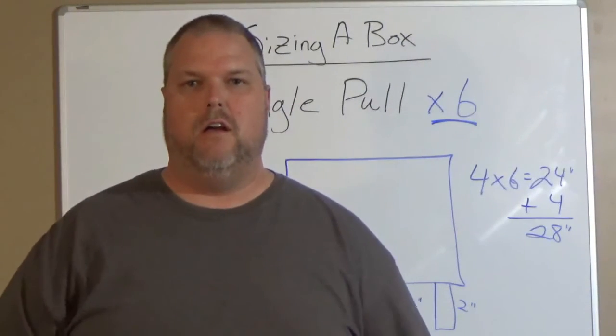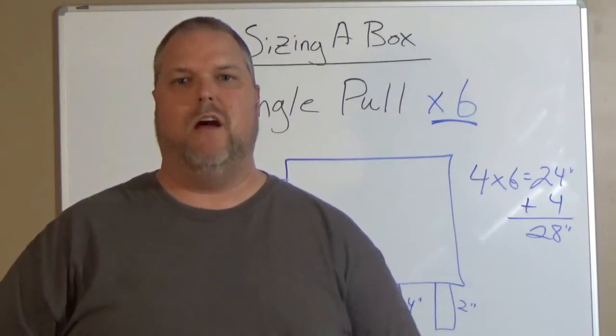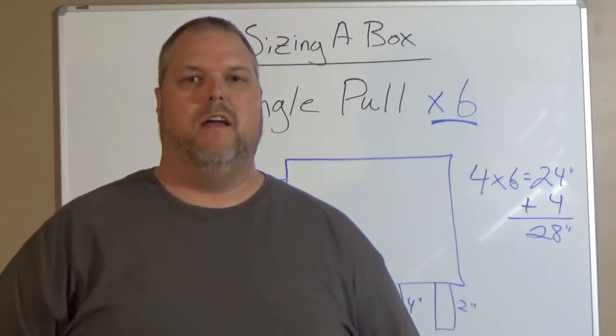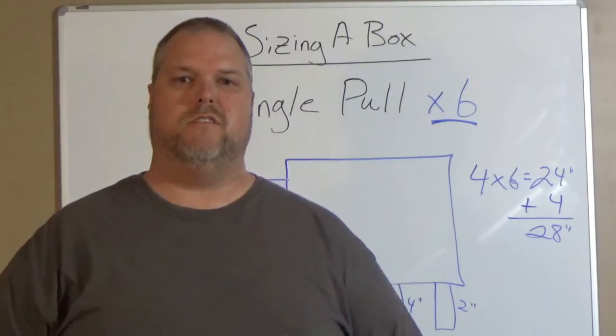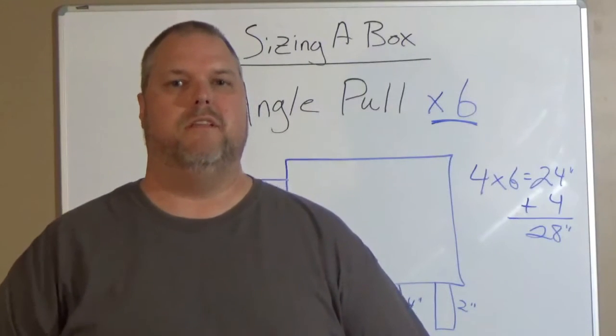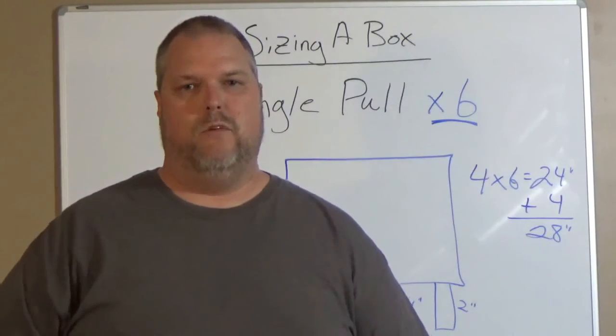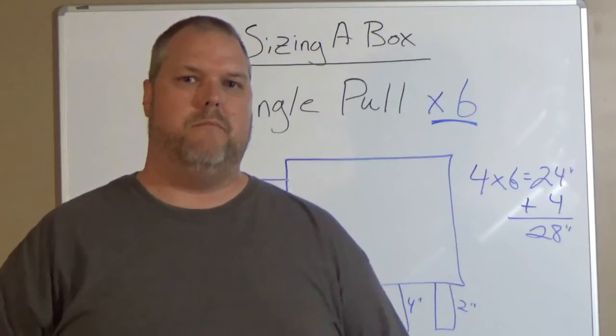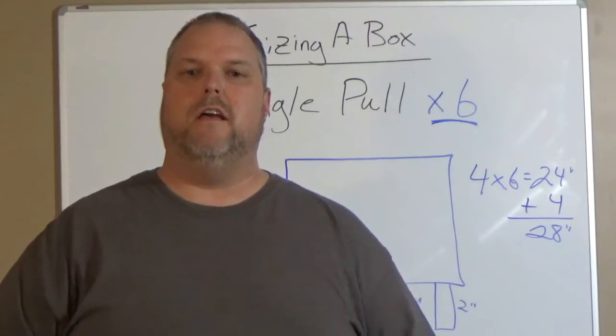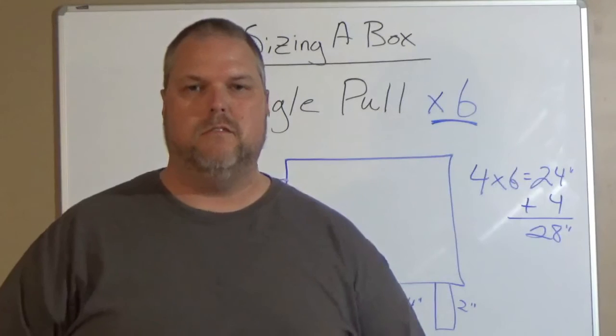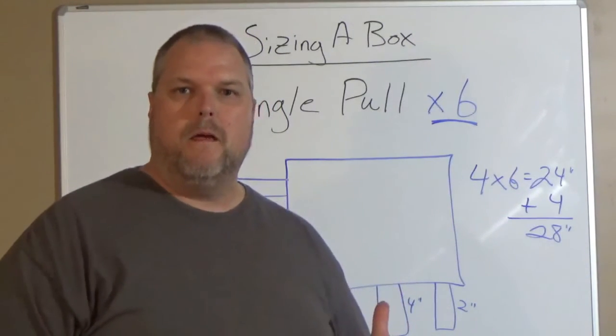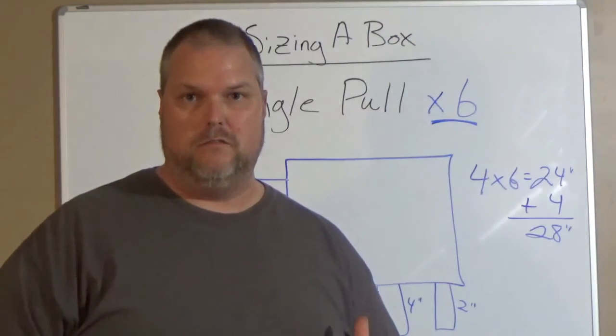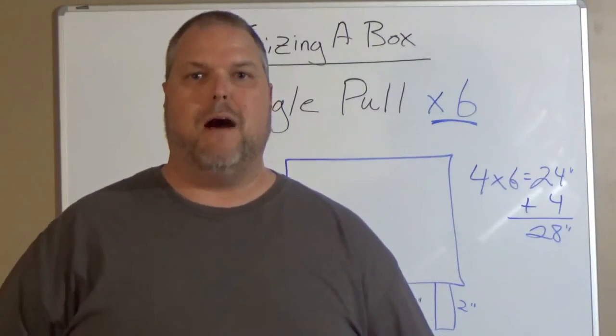Obviously, guys, we have the same conduit going in one way as we do have it coming out the other way. So if we did have more conduits, we have to size them a little bit different. So remember, every scenario is going to be a little bit different. You just have to remember that you take the largest conduit, multiply it by 6, add the additional conduits to that number, and that gives you the size of your box.